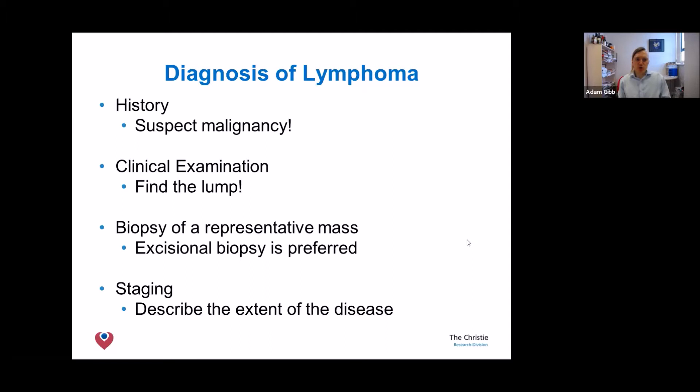When patients come to us with these symptoms, we first have to suspect cancer based on the history. We examine the patient to find the lump, then get a good biopsy so that histopathology colleagues can make the diagnosis. We then stage the cancer — putting the patient through a scanner, asking whether there are lumps of lymphoma elsewhere. With lymphomas, frequently the answer is yes.